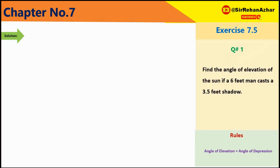Exercise 7.4, Question number 1: Find the angle of elevation of the sun if a 6 feet man casts a 3.5 feet shadow. Question में हमने angle of elevation को मालूम करना है। Rule यह है कि angle of elevation is equal to angle of depression.